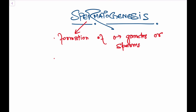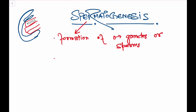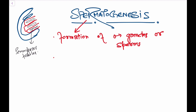Spermatogenesis occurs in the coiled tubules called seminiferous tubules, which are located inside the testicular compartments. The testes has these testicular compartments, and each testicular compartment contains these coiled tubules — the seminiferous tubules. So if asked where spermatogenesis occurs, we say: in the seminiferous tubules.